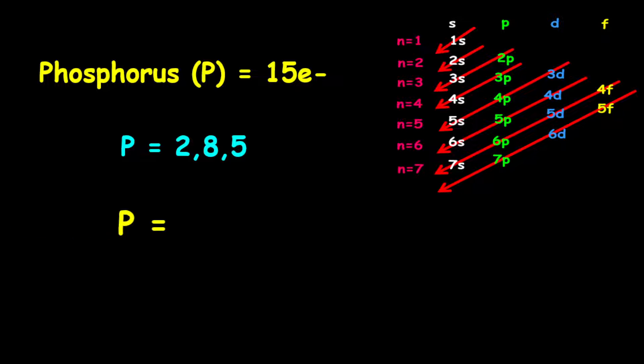For the orbital filling electron configuration, it is given as 1s2, followed by 2s2, then 2p6, followed by 3s2, then 3p3.